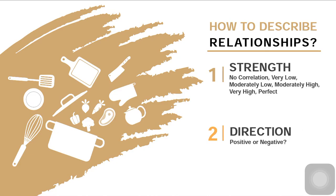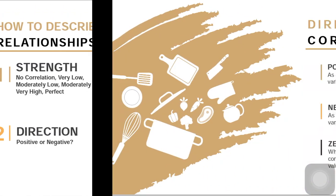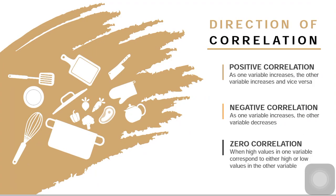The second is, we describe a relationship through its direction. We ask, what is the direction? Is it positive or negative? Let's talk about the three directions of correlation. It can be positive, negative, or zero.